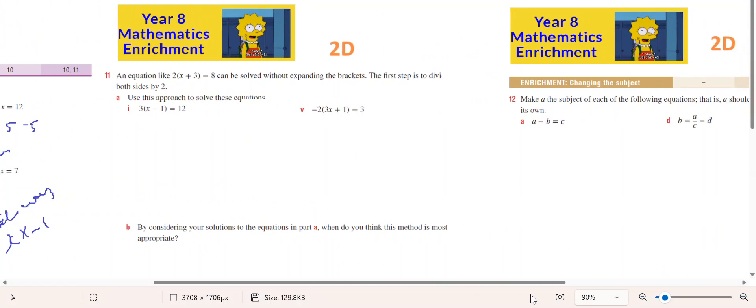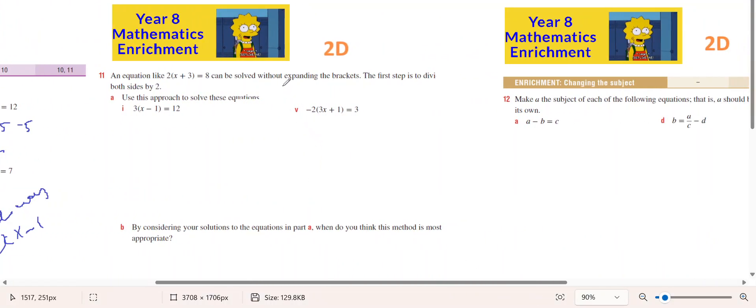Question 11 in 2D asks you to solve it two different ways and then decide which one is better. The first option is we divide both sides by 3.